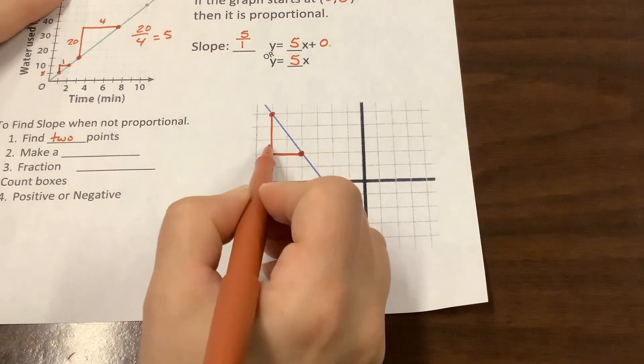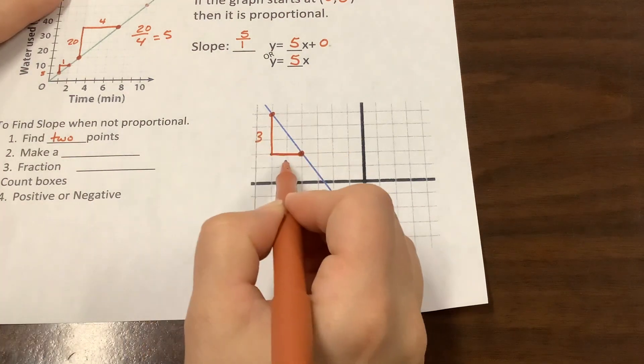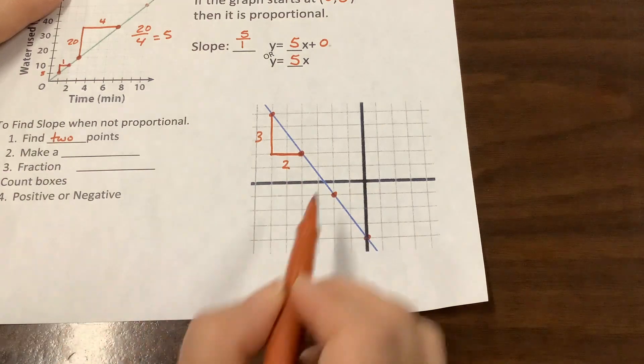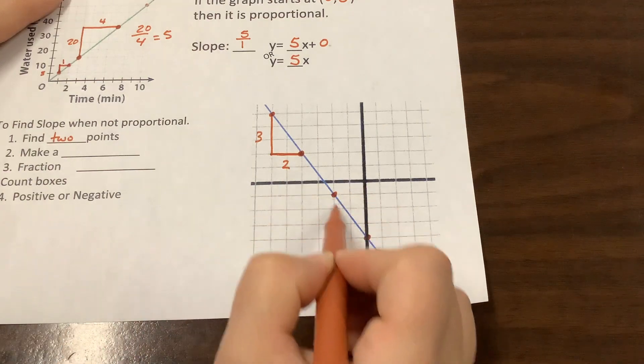How far down is this from this point? And how far over is it? Two. And it should repeat that pattern the whole way down it, right?